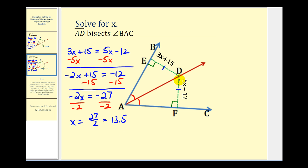But you may also be asked to determine the length of each segment. We know they're the same length, so we can substitute x equals 13.5 into either expression to determine the actual length of these segments. Using the expression three x plus 15, now that we know x is 13.5, we can replace x with 13.5.